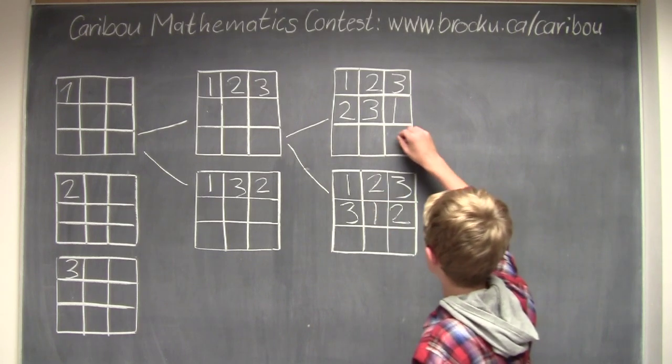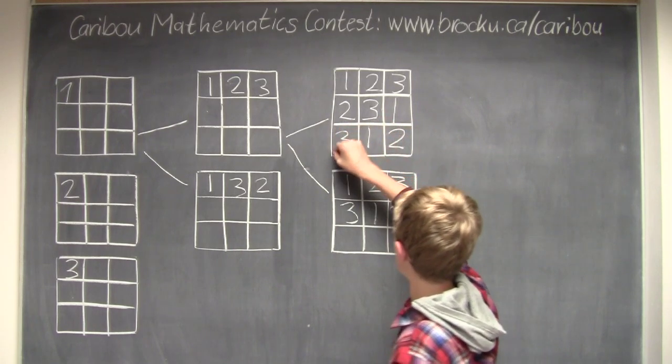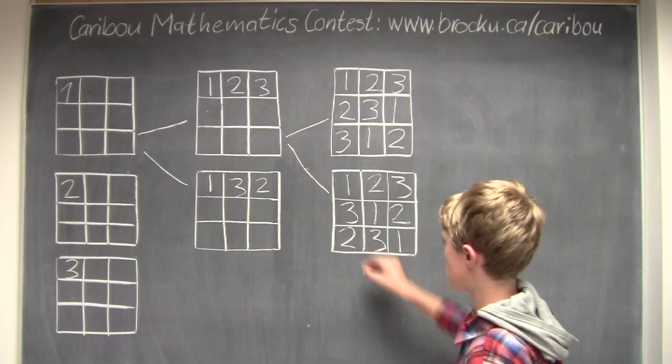So now we know that 2 has to go here, 1 has to go here, and 3 has to go here. And 1 has to go here, and 3 has to go here, and 2 has to go here.